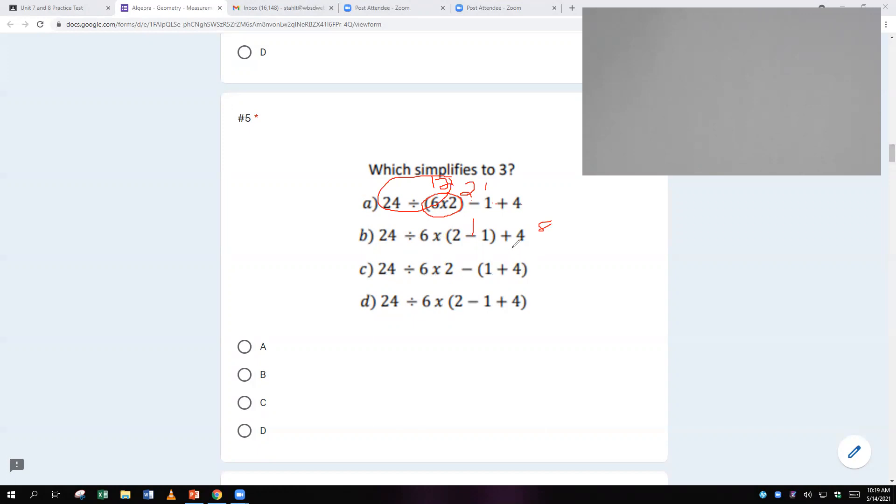And then looking over here, the first thing you do is in parentheses. That turns into a 5. And then we do 24 divided by 6, which is 4. And then 4 times 2 is 8. And 8 minus 5 is 3. So this one is 3. So that's going to be our answer.